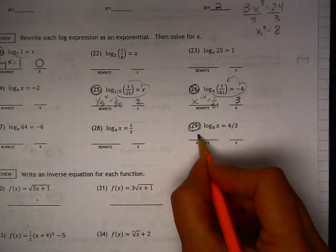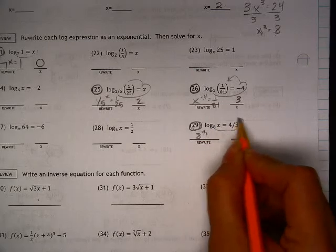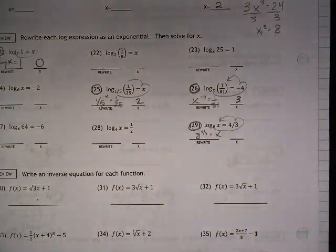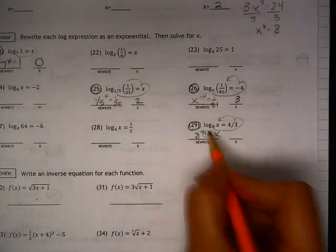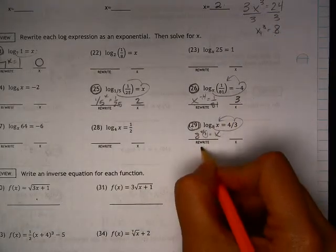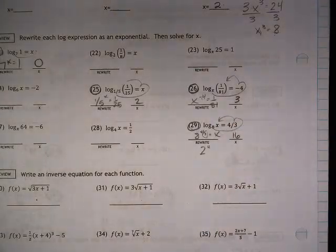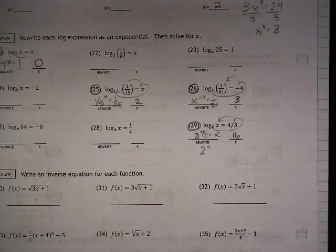For this one here, I have 8 to the 4 thirds is equal to x. So what do I need to do? I need to cube root the 8, which is 2, and then I need to take 2 to the 4th power, which is a 16. Kind of cool.